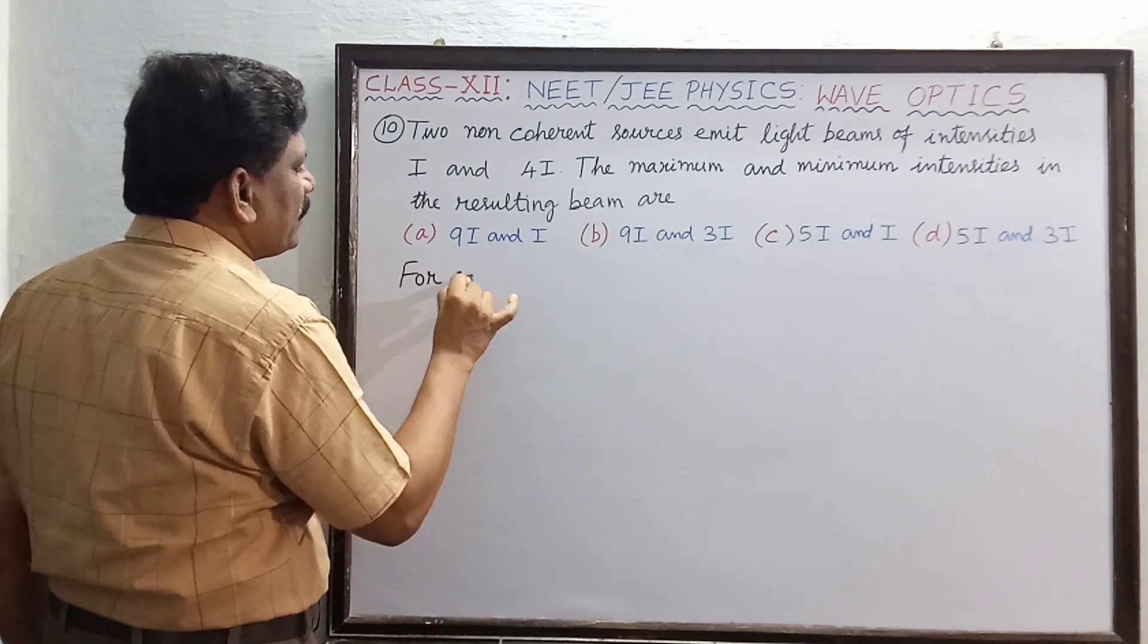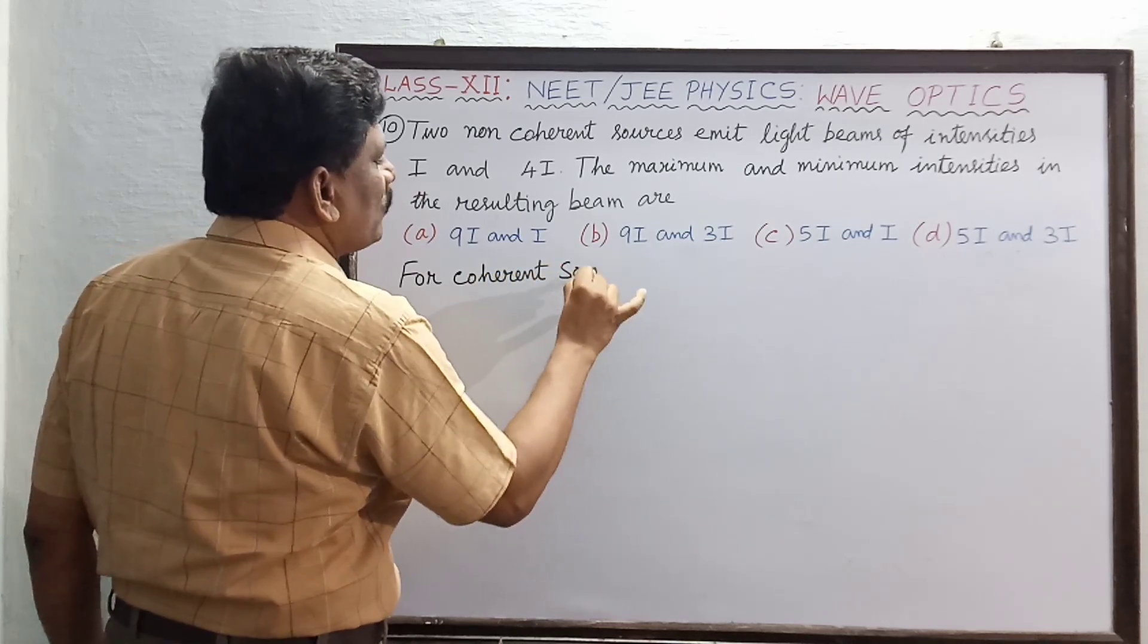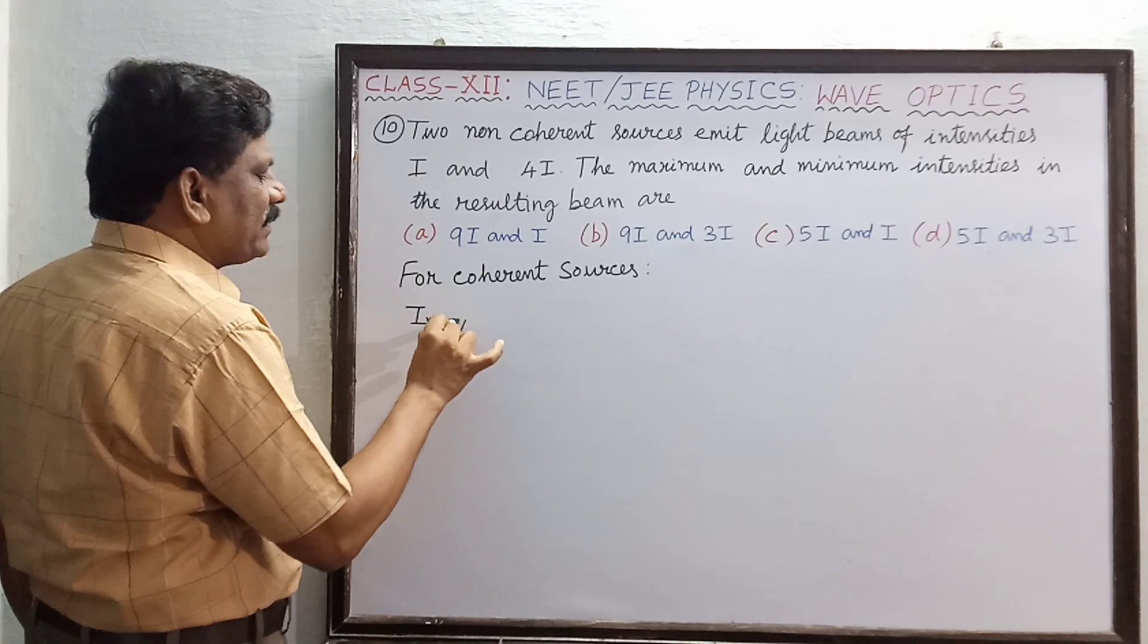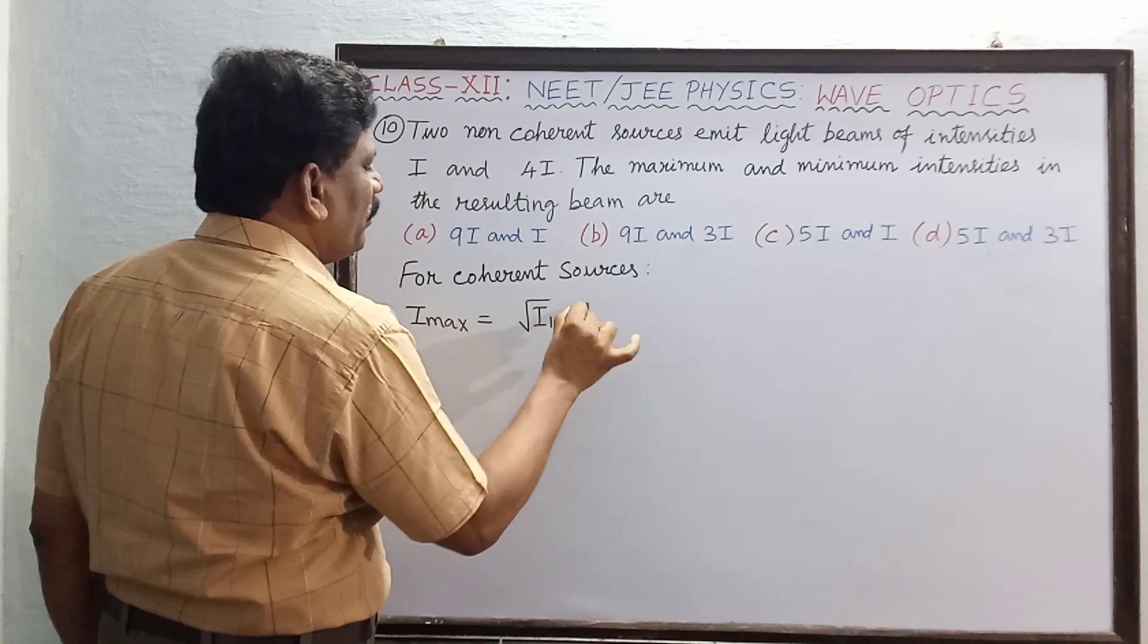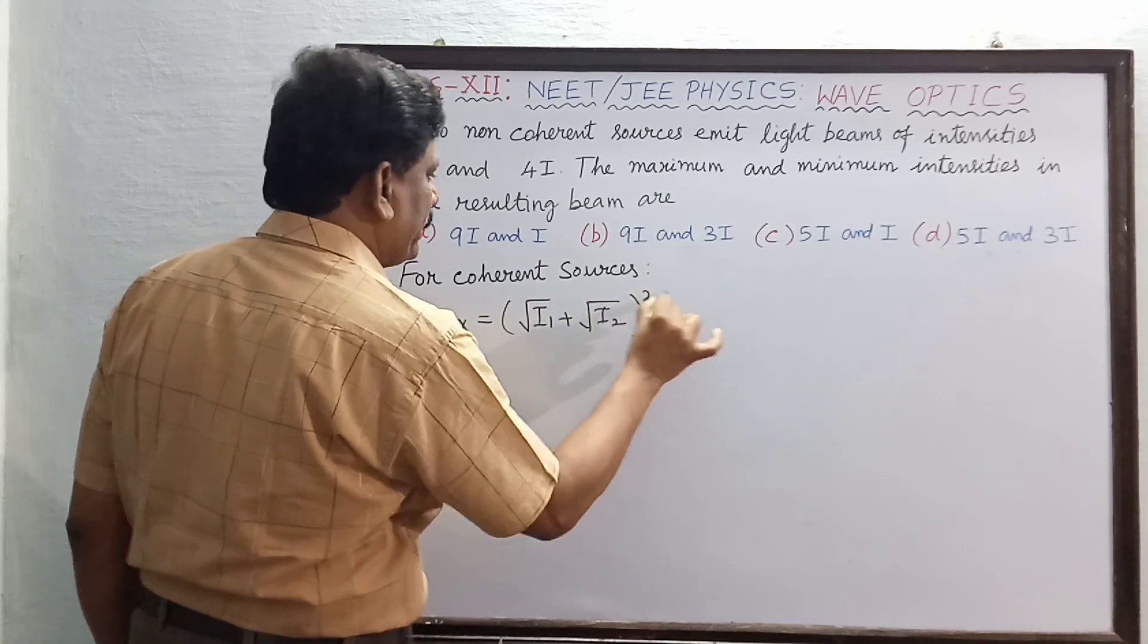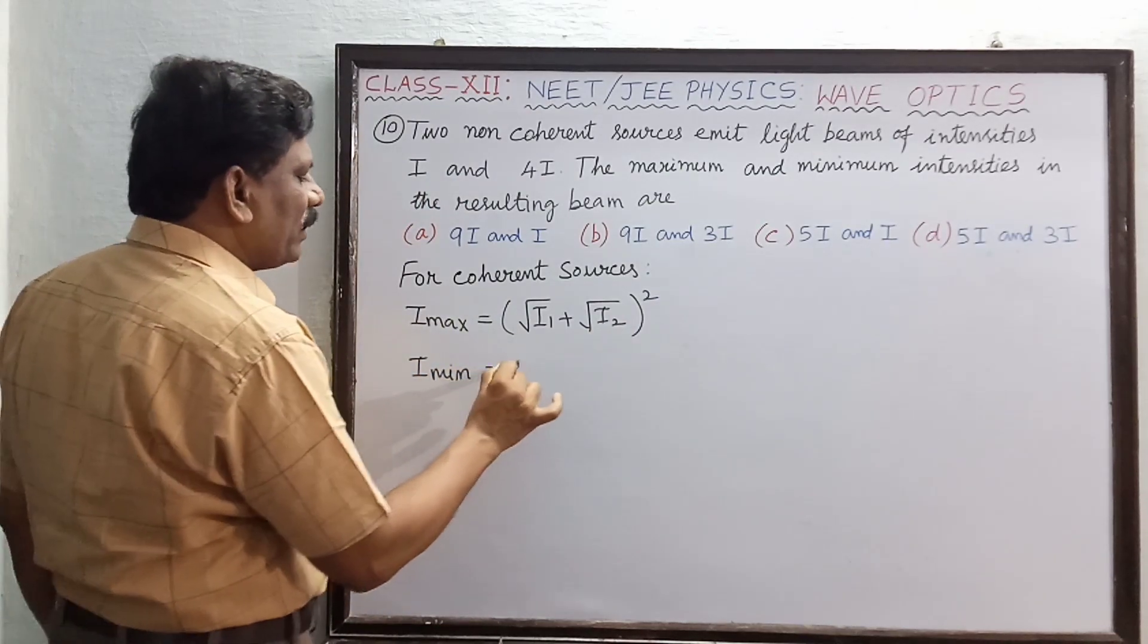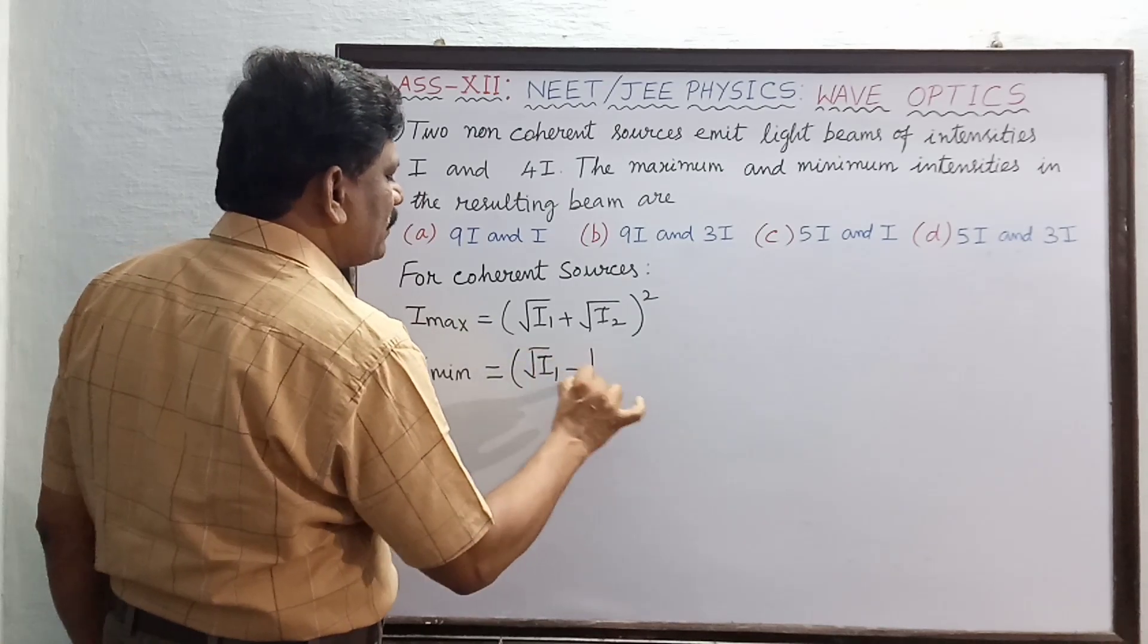Anyhow I will begin with the condition known first. For coherent sources, what we have studied: I maximum is equal to (√I1 + √I2)² and I minimum is equal to (√I1 - √I2)². This is what we have studied for coherent sources.